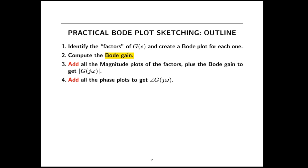That's a high-level explanation of the sketching rules. In a minute we're going to go through these in more detail and then do an example. The steps are: identify all the factors of G(S), sort out the number of poles or zeros at the origin, calculate the Bode gain, put into your magnitude plot all the sub-Bode plots for each factor, do the same for the phase plot, then once you have all the mini-Bode plots done for each factor, just add them up to get the complete magnitude and phase plot.